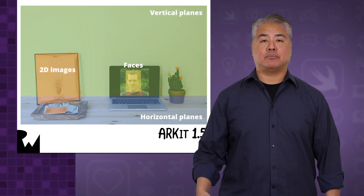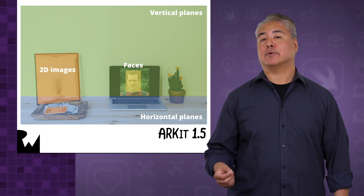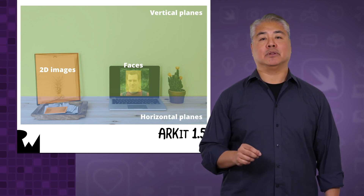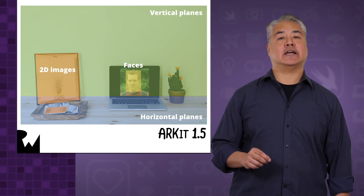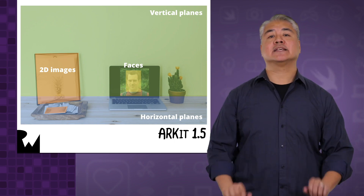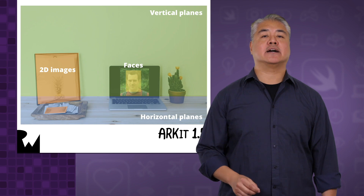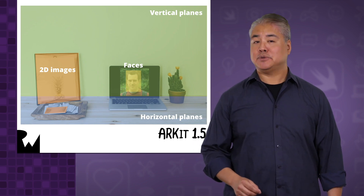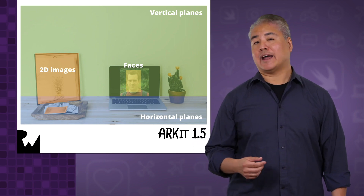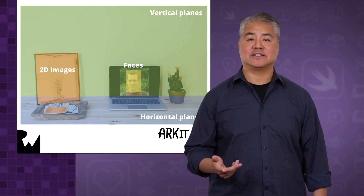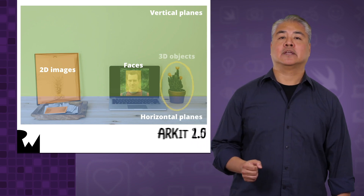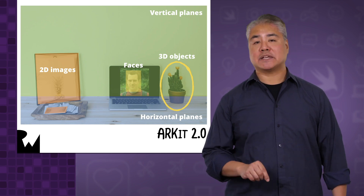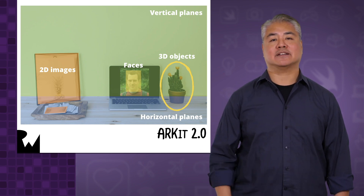With ARKit 1.5, which came out with the iOS 11.3 update, it brought two new goodies to the table: the ability to detect real-world vertical planes, and the ability to recognize specified real-world flat 2D images such as photographs, paintings, book covers, signs, and so on. ARKit 2.0 added the ability to recognize specified real-world 3D objects.